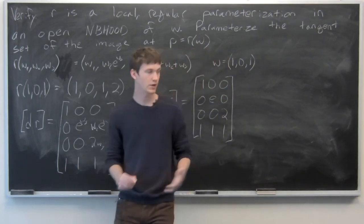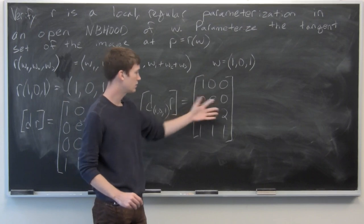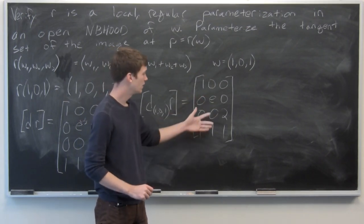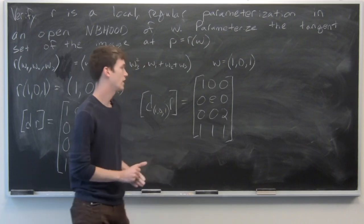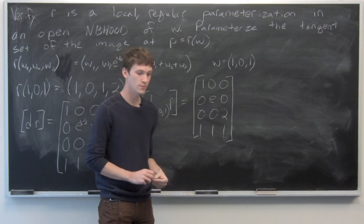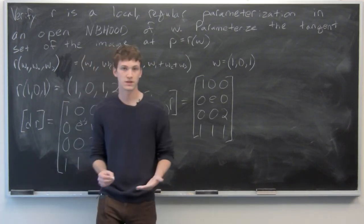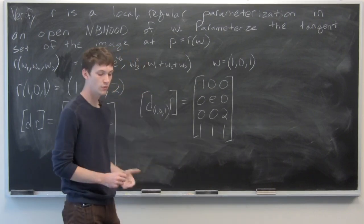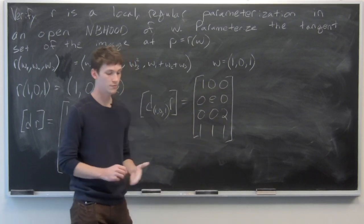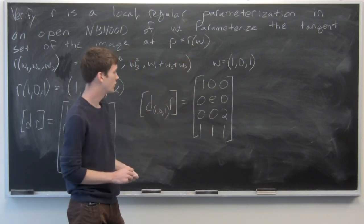Now we can see just by looking at it, or we could do row operations, but it's a lot easier to just look and see that each of the columns is linearly independent, and hence the rank of our Jacobian matrix at 1, 0, 1 is 3. And so that means we have a theorem that tells us that there exists an open neighborhood of w at 1, 0, 1.